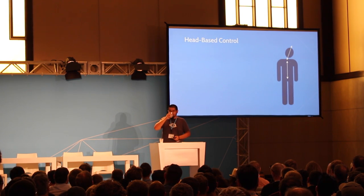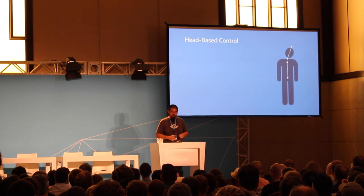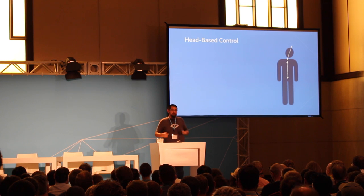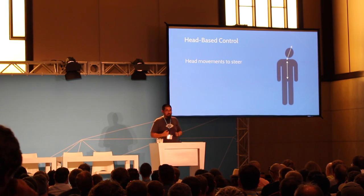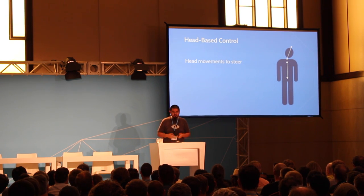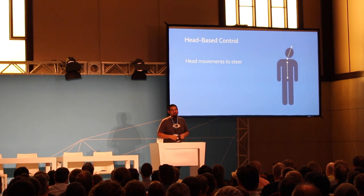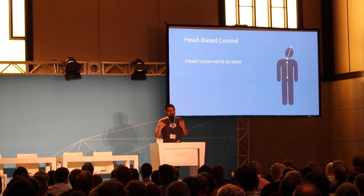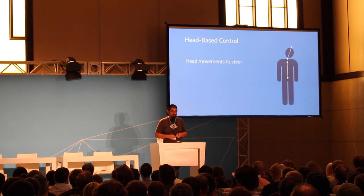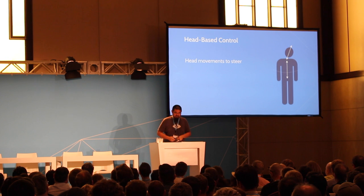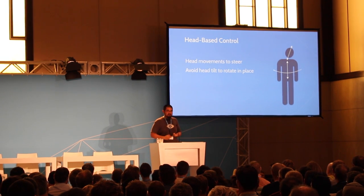One thing many developers and researchers at Oculus have been experimenting with is head-based control — using the sensors in the Rift so that your head movements can steer your avatar or camera. The core idea is to provide some vestibular input to line up the senses: instead of your vestibular organs saying you're sitting perfectly still while vision says you're moving, your vestibular organs still get the sense that something is happening as your head undergoes some kind of motion. That aligns the senses a little bit. However, one thing I can report as a bad idea: avoid using head-tilt to rotate in place.